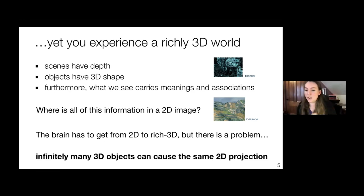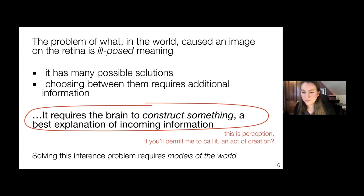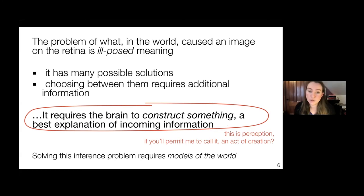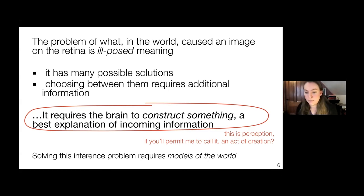How do we constrain that problem when solving for what we see? This problem is ill-posed because it has infinitely many possible solutions. Choosing between them requires some additional information, and in the case of the brain, modern neuroscience understands this as requiring the brain to construct something. Perception is fundamentally constructive or creative — it requires the brain to construct a best explanation of incoming information. That makes perception itself an active creation or an active synthesis of the scene.